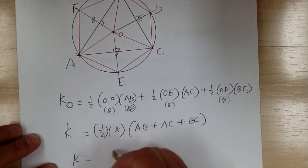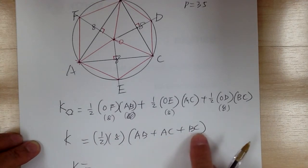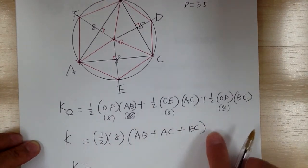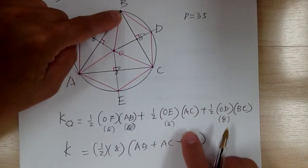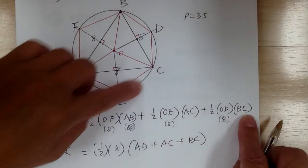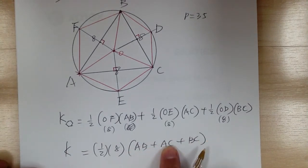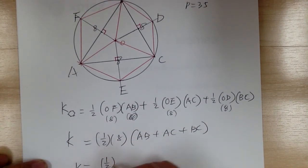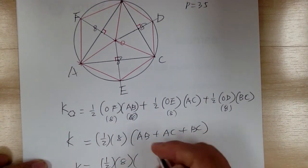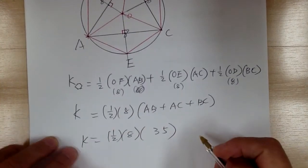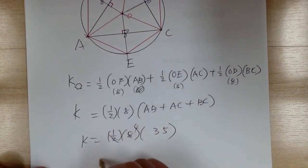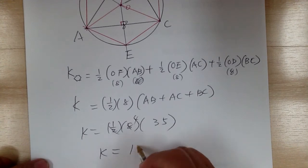And so now AB plus AC plus BC—so A, B, A, C, B, C—this would be the perimeter. So this would equal one-half times eight times the perimeter, which is 35. And you can cancel, so K would equal 140.